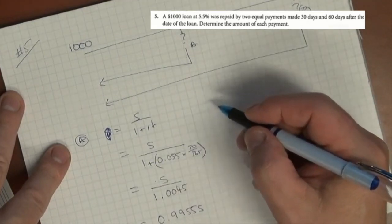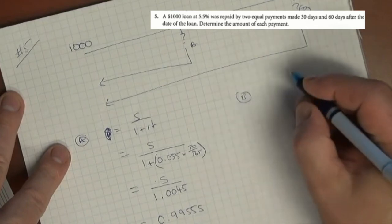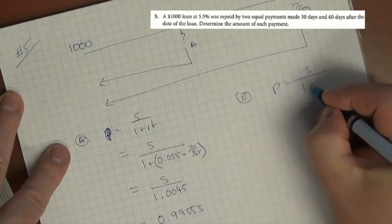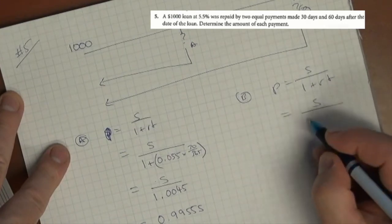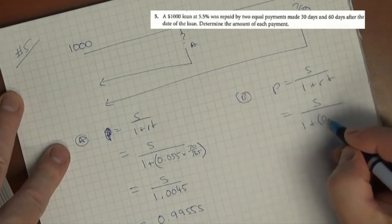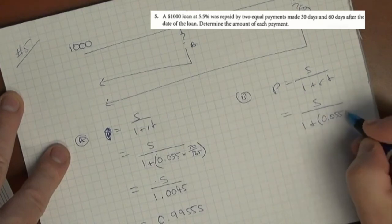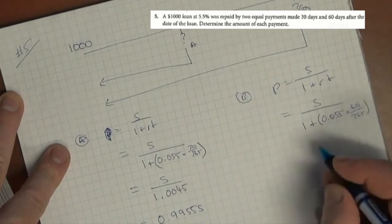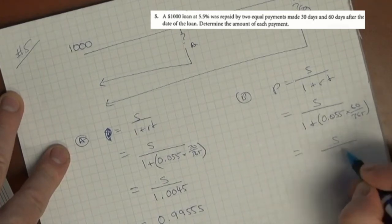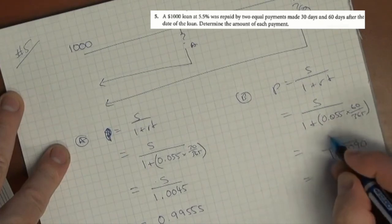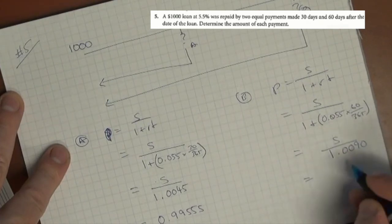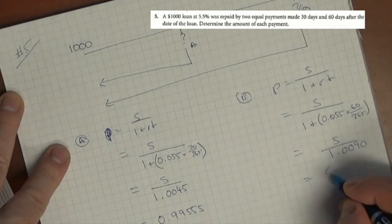The second instance, B, is P equals S over 1 plus RT. That's S over 1 plus 0.055 times 60 days - 60 over 365. That's the same as S over 1.0090. We take 1 divided by 1.0090 and we get 0.9910S.